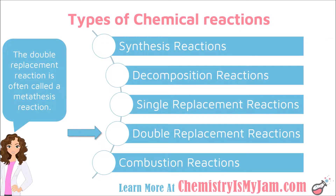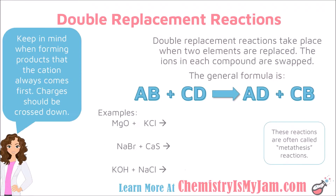As we continue looking at the types of chemical reactions, let's focus on double replacement reactions, which are often called metathesis reactions. Double replacement reactions take place when two elements within a compound are replaced.